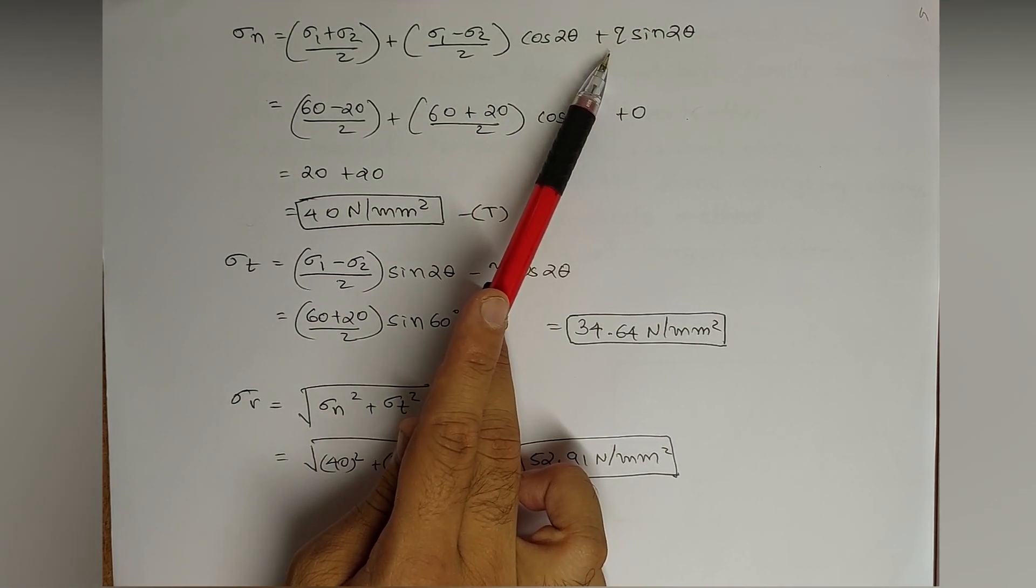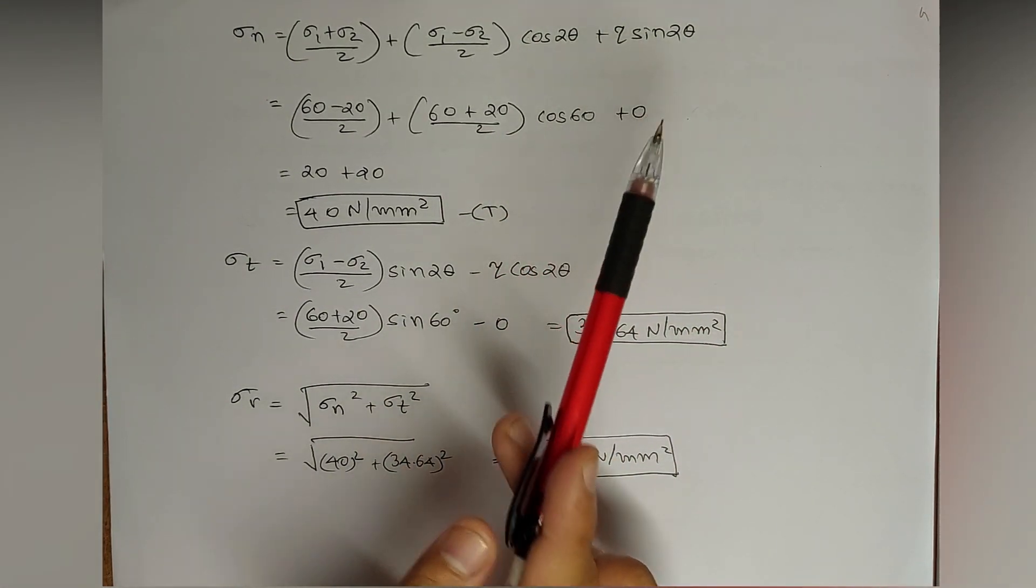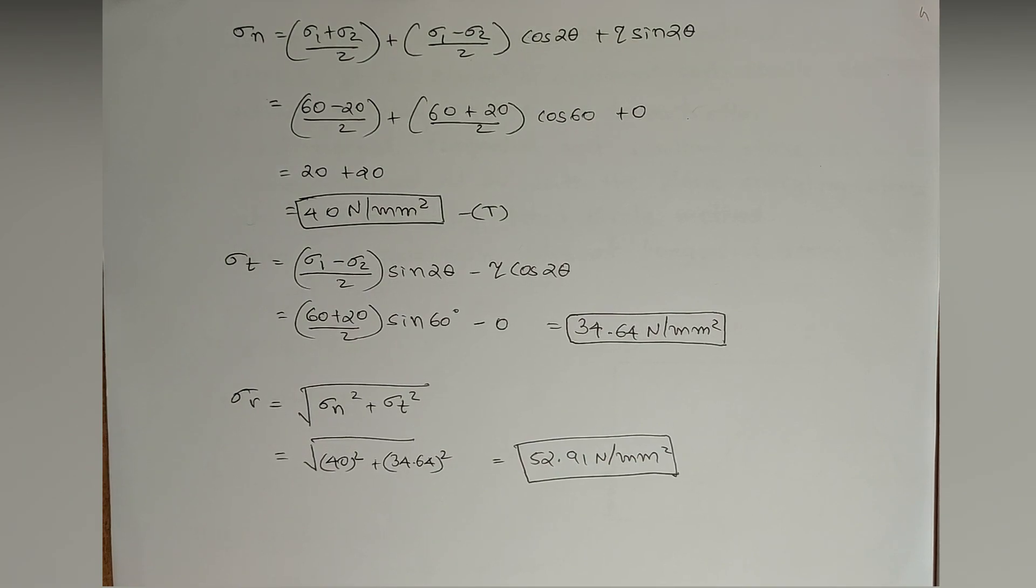This tau is shear stress, which is zero, that is not given in the question. So again, this is zero. This question is very similar to that of question number 1.